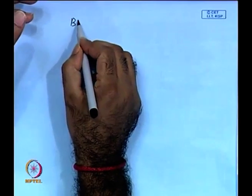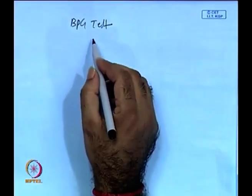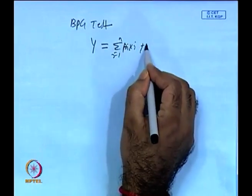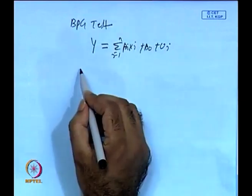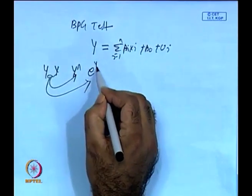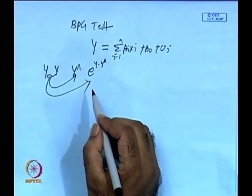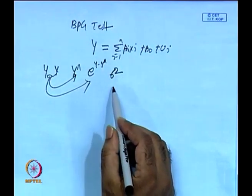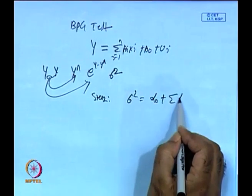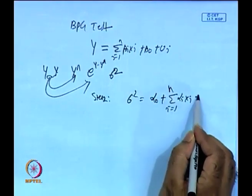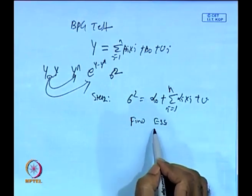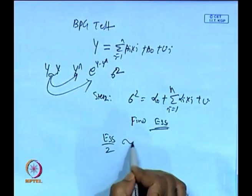There is another test called the BPG (Breusch-Pagan-Godfrey) test. First design a model: y = Σβ_i X_i + β₀ + U_i. Obtain Y-hat, then find E = Y − Y-hat, and compute error variance σ². In step 2, regress σ² = α₀ + Σα_i X_i + U. Then find the explained sum of squares divided by 2, which follows a chi-square distribution with k−1 degrees of freedom.